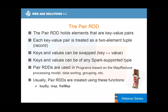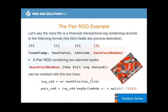The usual way to create Pair RDDs is to have a particular key and a value — it can be a string, a primitive, or content of a file. You can use functions like keyBy, map, and flatMap. Here's an example of RDD creation from a large transaction log file — probably part of your online banking or other system that captures transactions. We've got four fields, and what we'd like to do is use the bank card number as the key using keyBy.